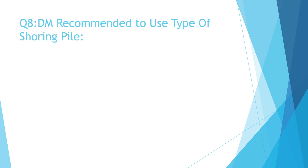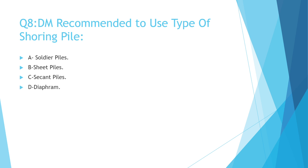Question number 8: DM recommended type of shoring is — a. soldier piles, b. sheet piles, c. secant piles, d. diaphragm. The correct answer is a. Soldier piles.